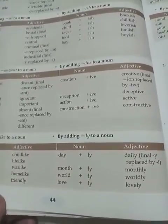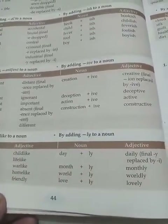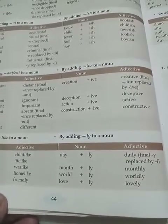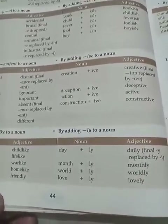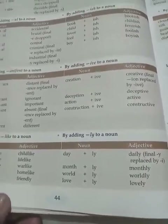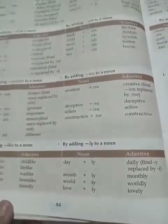By adding LY to a noun: DAY plus LY becomes the adjective DAILY; MONTH plus LY becomes the adjective MONTHLY.